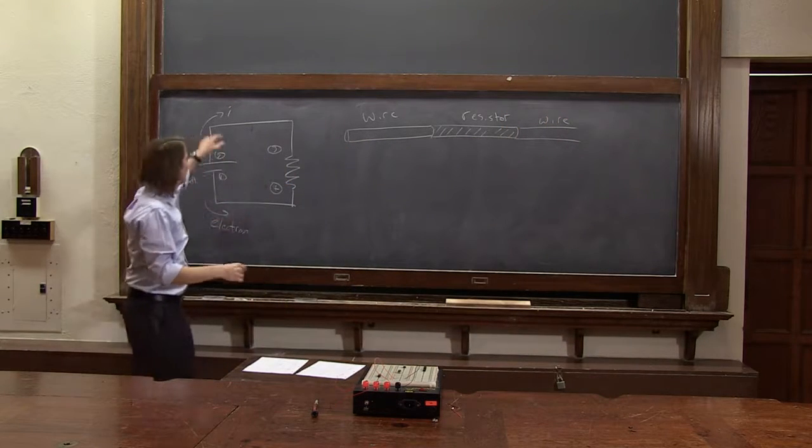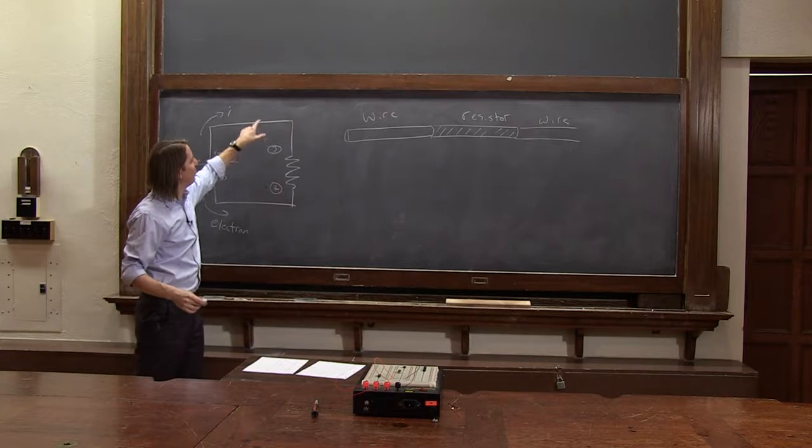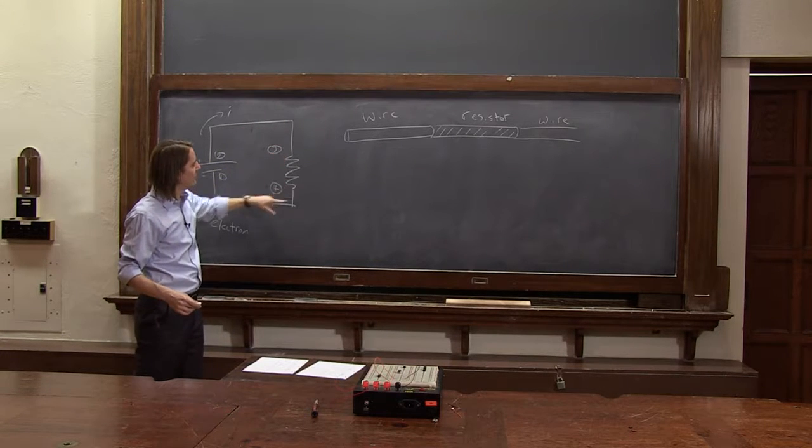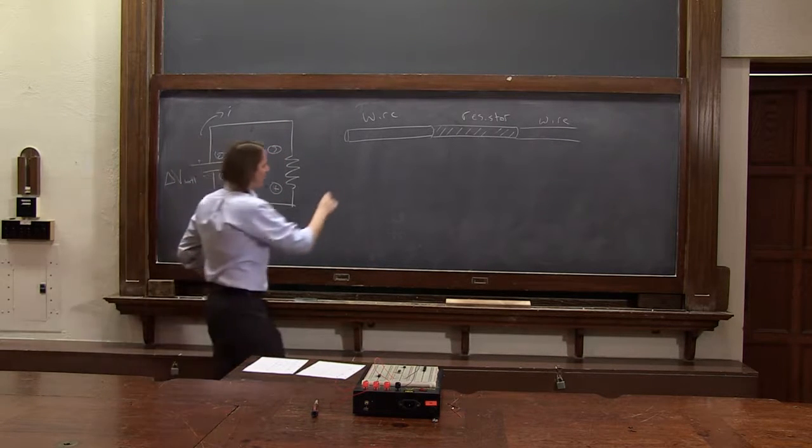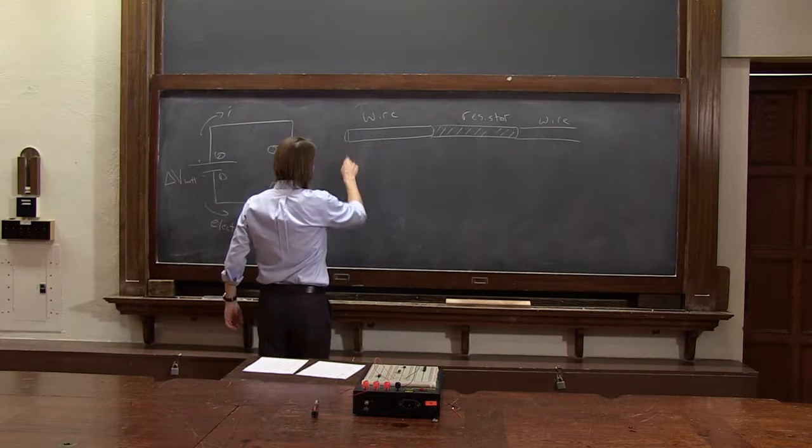So we talked about it in the circuit. We said it flows with no potential drop, meaning no loss of energy here, then all your losses here, and then no loss here. But let's think about what the charge carrier really is experiencing in its real life.